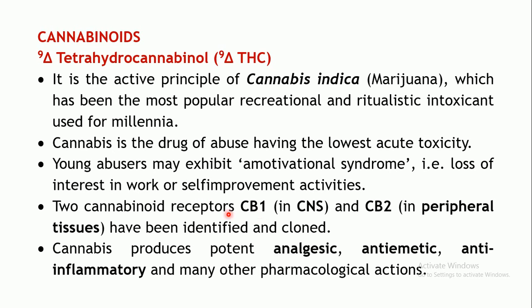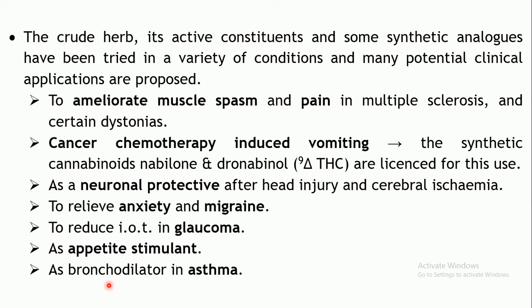There are two cannabinoid receptors discovered in the body: CB1, located in the CNS, through which CNS effects are mediated, and CB2, mainly found in peripheral tissues. Apart from CNS effects, cannabis also has analgesic, antiemetic, and anti-inflammatory properties. The crude drug, its active principles, and synthetic analogs have been proposed for use in various conditions.